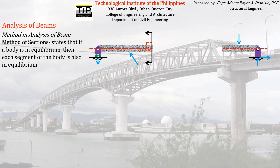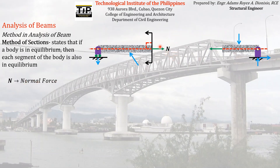When we disconnect parts with a fixed connection, two forces and one moment appear — equal in magnitude but opposite in direction. One of the two forces that appear when we separate the beam, we usually call N. What is N? That is what we call normal force. When we say normal, it's synonymous with perpendicular — perpendicular to the cross-sectional area of the beam. That's why it's called normal force.